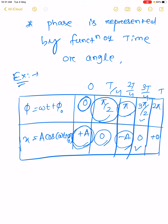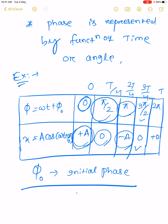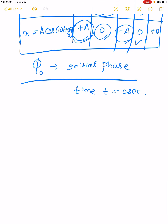We conclude that phase always gives us the idea about the position and direction of motion of the particle. Similarly, phi naught is called the initial phase. At the starting time t equal to 0 seconds, the initial position of the particle is given by phi naught. When t equals 0, the general phase changes to initial phase phi naught.